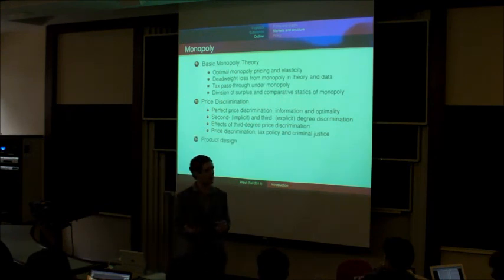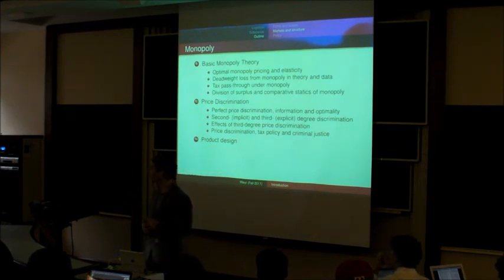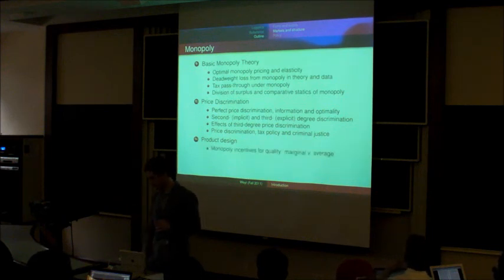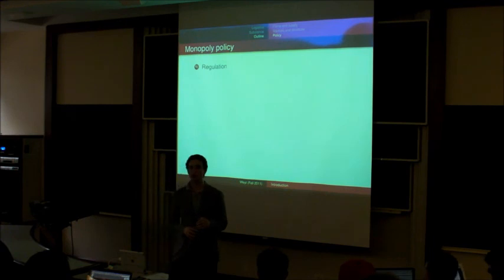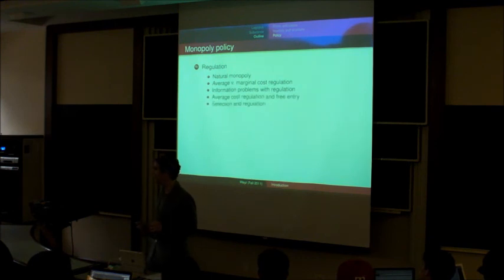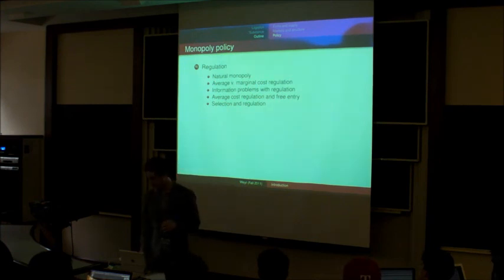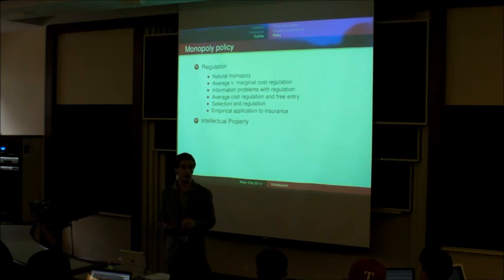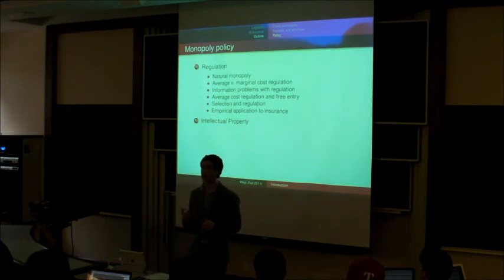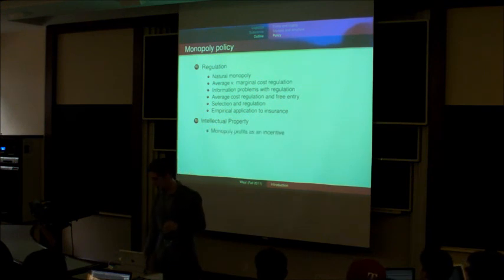We'll talk about the design of products, how companies choose not just how much or what price to sell at, but what quality of product to supply, or what types of products to supply. We'll talk about regulation of monopolies. How to make sure that they don't charge too high prices, and when it makes sense to regulate, and how that's related to the insurance market, and some of the things that have come up related to Obamacare. We'll talk about intellectual property, and how to reward new innovation, when intellectual property is the right way, and when other systems are preferable.